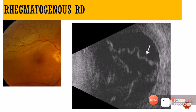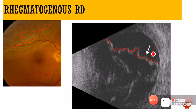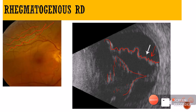Now let us look at the regmatogenous RD — an RD which happens after a tear. On fundus image, we can see the corrugated appearance of a regmatogenous RD. Similarly, on B-scan, we can see the folded appearance of the separated retina — this is the regmatogenous RD. In one case, there is a PVD with reflections in the vitreous — this patient had long-standing vitreous hemorrhage causing traction, resulting in a combined RD with both a traction component and a regmatogenous component.